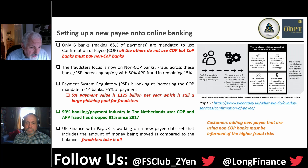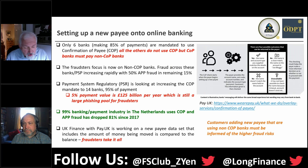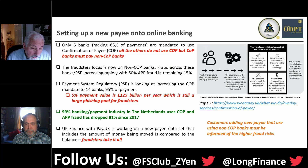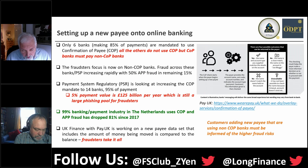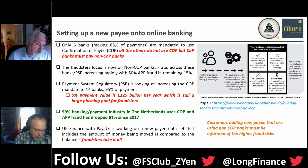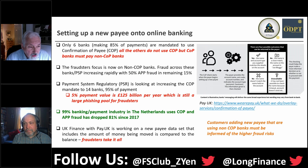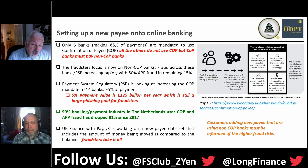Fraud levels for non-CoP banks have actually increased — it's safer to transact between the six CoP banks because they both check everything, but 95% don't do that. The fraud has gone up tremendously for non-CoP banks. Liability is still unclear but should fall on the bank that set up the payee account — they're supposed to know their customer and track what the account was set up to do. The Payment Systems Regulator is looking at increasing the CoP mandate to 14 banks, covering 95% of payments — but 5% still represents £125 billion a year.